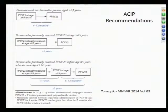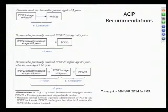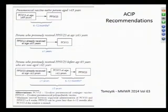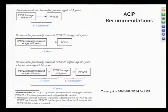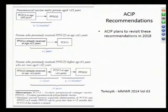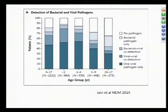Current recommendations: if unvaccinated and over 65, start with the conjugate vaccine, then get the polysaccharide later. If you've already had the polysaccharide, wait a year before getting the conjugate. If you received the polysaccharide before age 65, get the conjugate when you turn 65. The guidelines push toward the conjugate. Revisiting these recommendations will take another couple of years, and there may be supply chain considerations since only one company makes the conjugate vaccine.